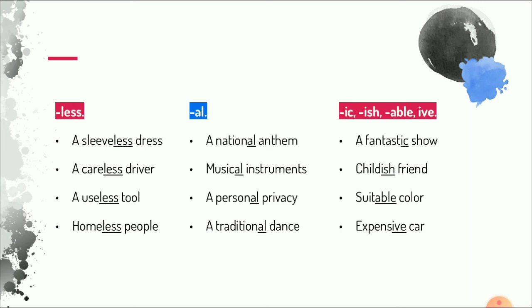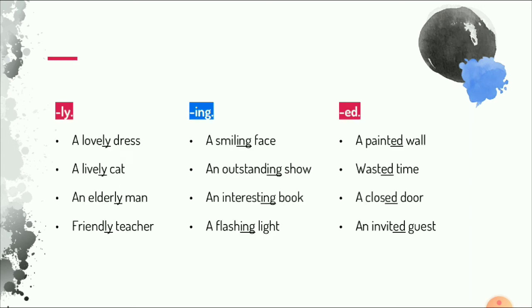The next adjective endings are -less, -al, -ish, -able, and -ive. For example: 'sleeveless' from 'sleeve' with ending -less; 'national' from 'nation' with ending -al; 'fantastic' with -ic; 'childish' with -ish; 'suitable' with -able; and 'expensive' with -ive. That covers the adjective endings.